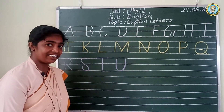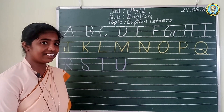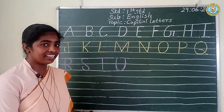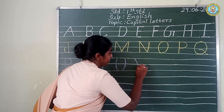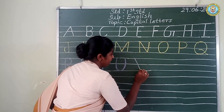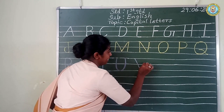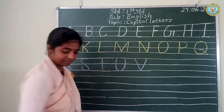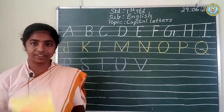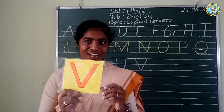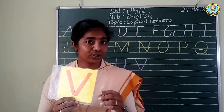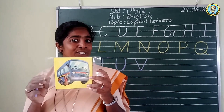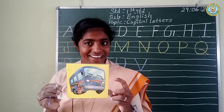Which is the next letter? Yes, you know it. It is V. The slanting line and one more slanting line. V for van. V for van. How do you go to school? We go to school in the van.